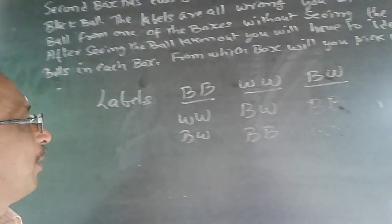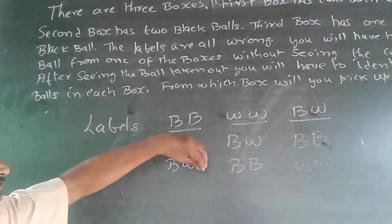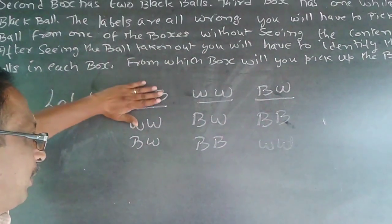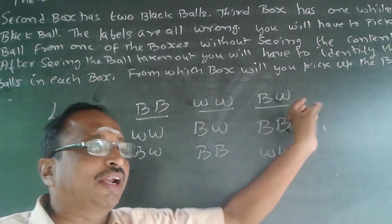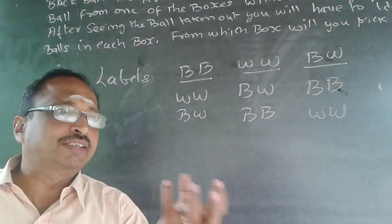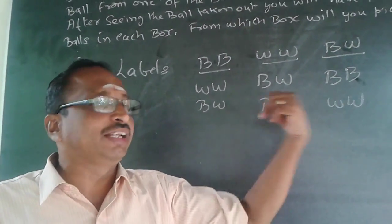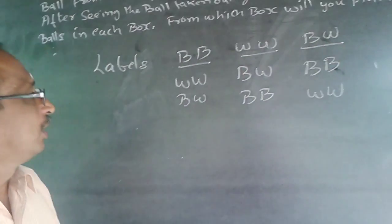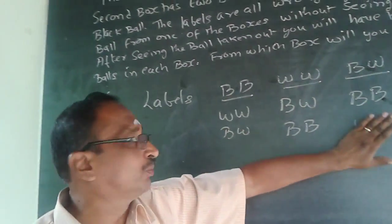Now I will have to pick up only one ball from one of these boxes. I know what the labels are. So from seeing the labels, I will have to choose from which box I will pick up the ball. After seeing the ball, I will have to tell the colors of the balls inside each box. So from which box can you pick up the ball? There are only two combinations possible for each label.